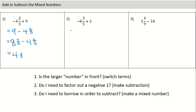Let's look at example two. Is the larger number in front? Yes — eight is larger than two, so terms are in the right order. Do I need to factor out a negative one? Yes — our leading term is negative and we're working with addition, so we factor out a negative, open brackets, and write the inverse: eight and three-fifths minus two. Don't forget the negative sign. Do I need to borrow? No — I'm leading with a mixed number, so I can safely subtract. Inside the brackets: eight minus two is six, and three-fifths minus zero is three-fifths. Answer: negative six and three-fifths.